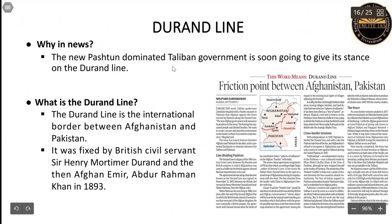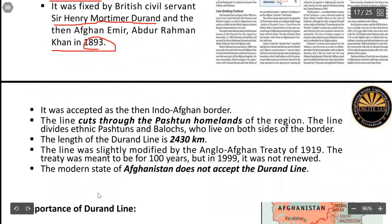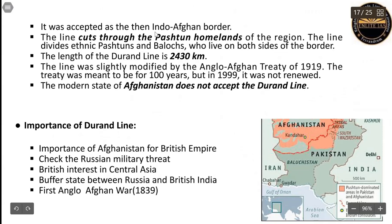The last topic for today is the Durand Line. Why was it in the news? The new Pashtun-dominated Taliban government in Afghanistan is going to give its stance on the Durand Line. The Durand Line is the international border between Afghanistan and Pakistan. It was fixed by British civil servant Sir Henry Mortimer Durand and Afghan Emir Abdul Rahman Khan in 1893. It cuts through the Pashtun homelands of the region and divides the ethnic Pashtuns and Baloch on both sides. The Durand Line is around 2,430 kilometers long.